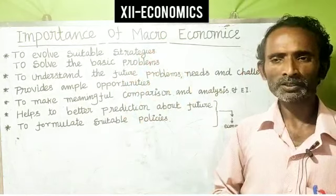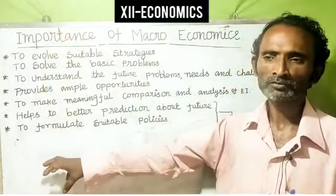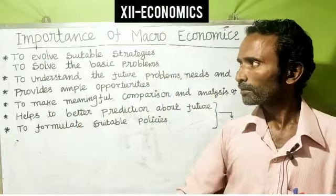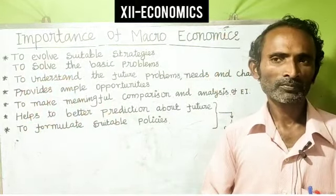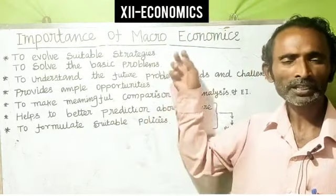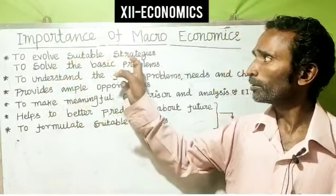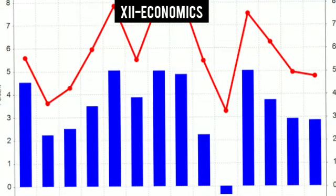So what level of information does macroeconomics need to provide? This level of information helps us realize the concept of economics. First, we can understand the functioning of an economy — how the economy works, how the Indian economy functions — for the purpose of evolving suitable strategies. Strategies are very important to match the economic plan and economic policies.